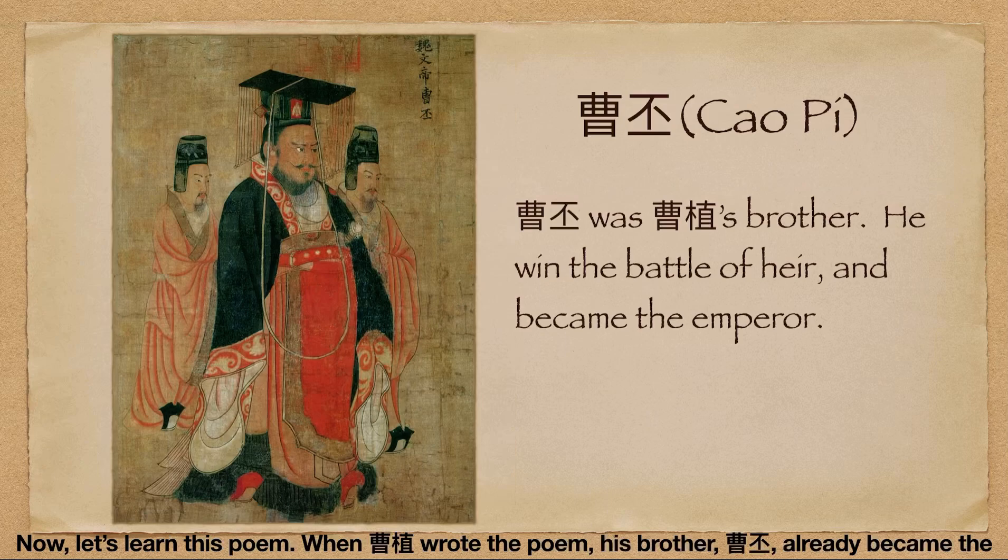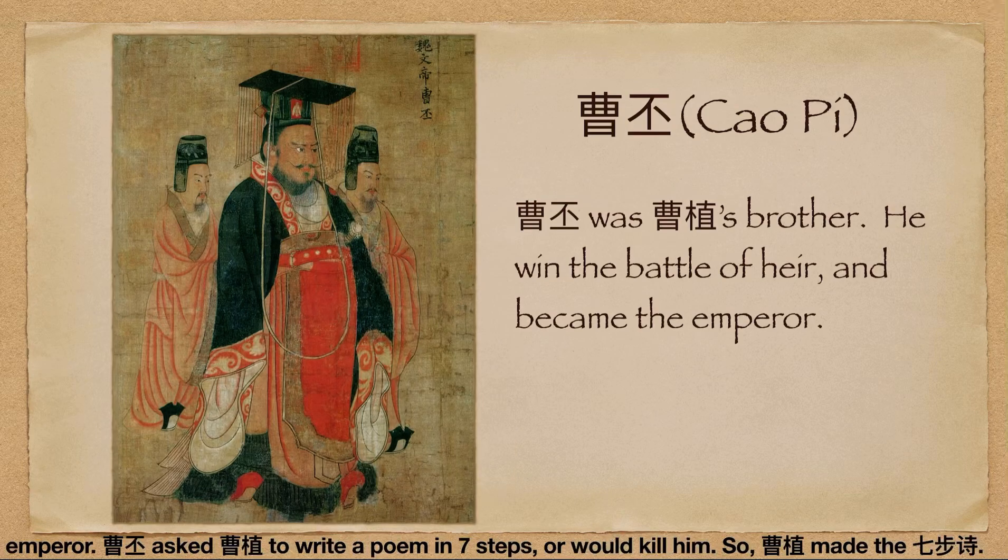Now let's learn this poem. When Cao Zhi wrote the poem, his brother Cao Pi had already become the emperor. Cao Pi asked Cao Zhi to write a poem in seven steps, or he would kill him. So Cao Zhi composed Qi Bu Shi.